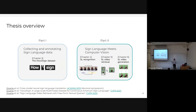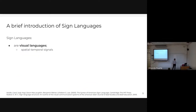This presentation is divided into two parts. The first part covers the collection and annotation of our continuous sign language dataset called How To Sign. The second part presents the methods we developed using How To Sign to address sign language in the main tasks of the computer vision community. Before jumping into these two main parts, I'd like to give a brief introduction to sign language — what they are and what they are not — so we're all on the same page.